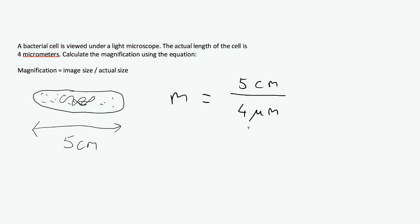Now, the problem with this is that I can't do it. I can't do that at the moment because centimeters and micrometers are not the same unit. Any time you use the magnification equation, you have to convert them into the same unit. So I could either convert 5cm into micrometers or I could convert 4 micrometers into centimeters.